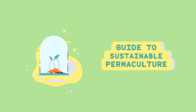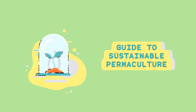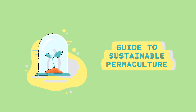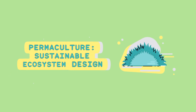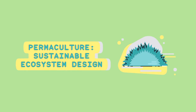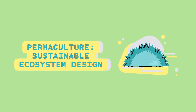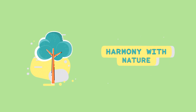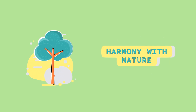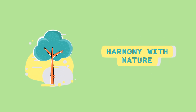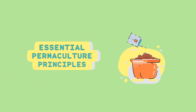Permaculture Principles: A Guide to Sustainable Living. Permaculture is a design system that seeks to mimic natural ecosystems to create sustainable human settlements. It focuses on working with nature rather than against it, promoting harmony between humans and the environment. Here are some key permaculture principles.